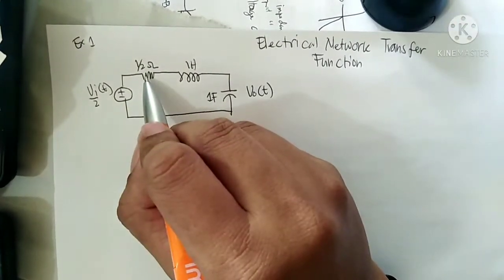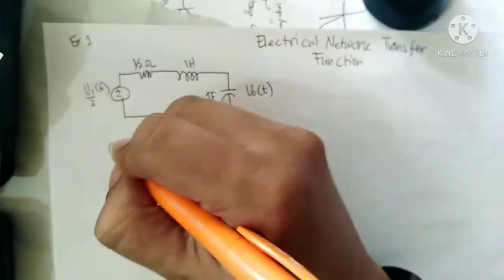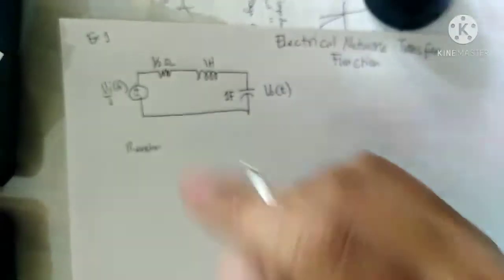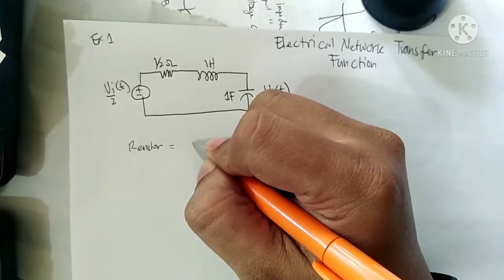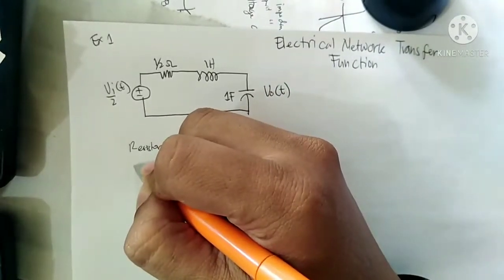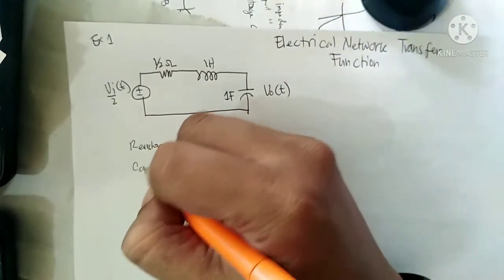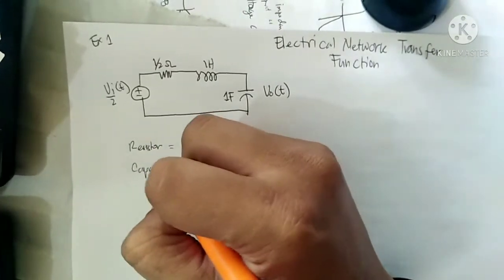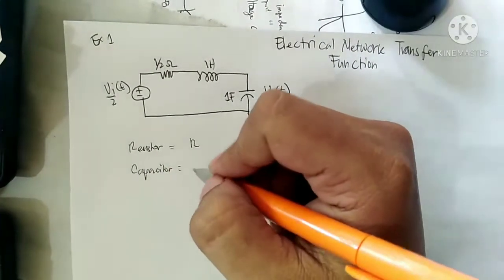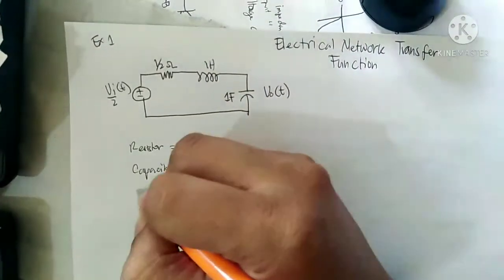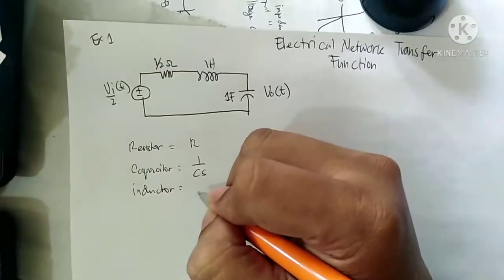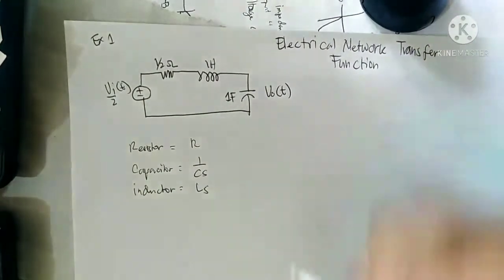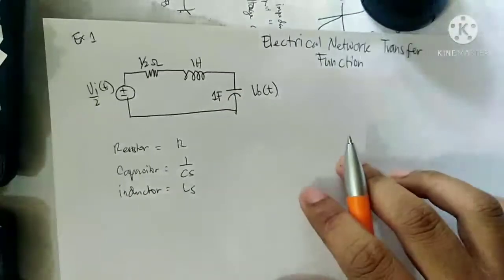The impedance of a resistor in the S-domain is equal to R. For a capacitor, the impedance is 1 over CS. For an inductor, the impedance is equal to LS. In this circuit, you can convert everything into the S-domain.